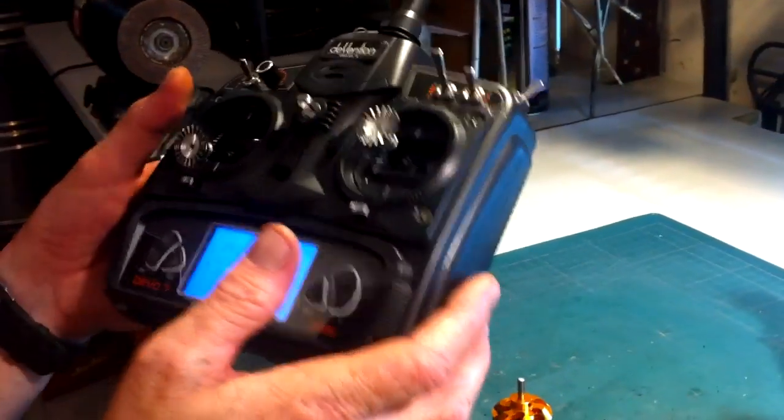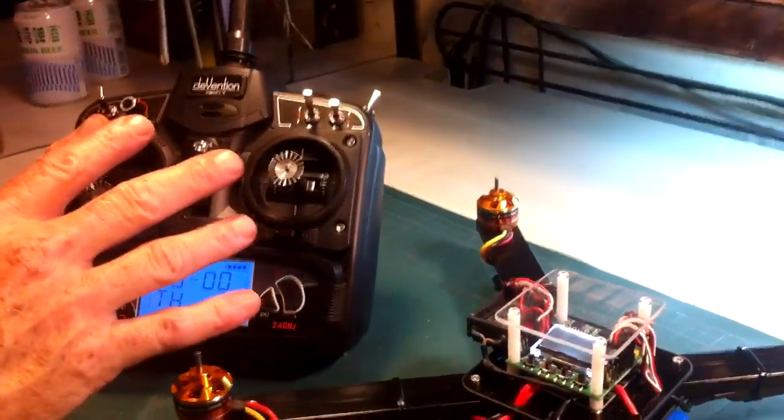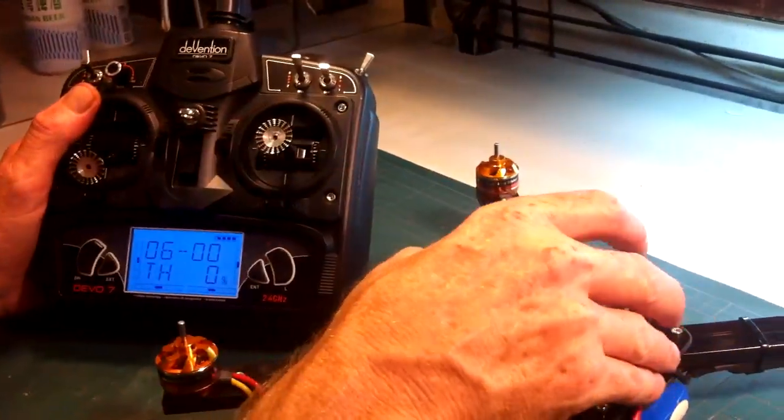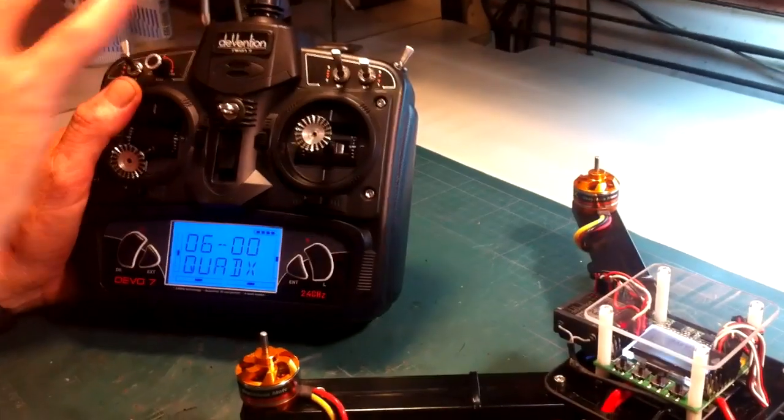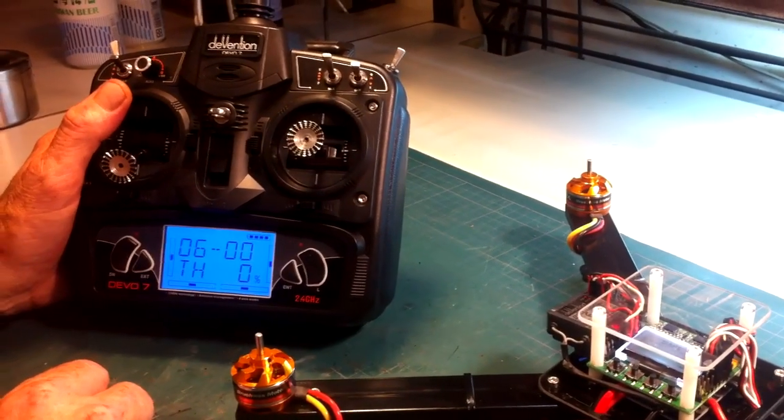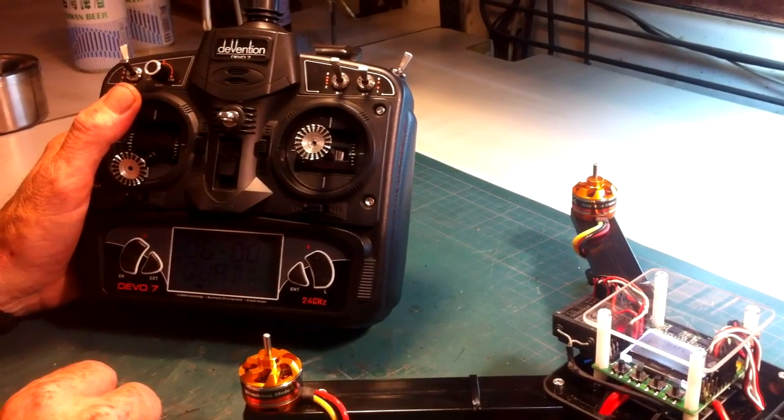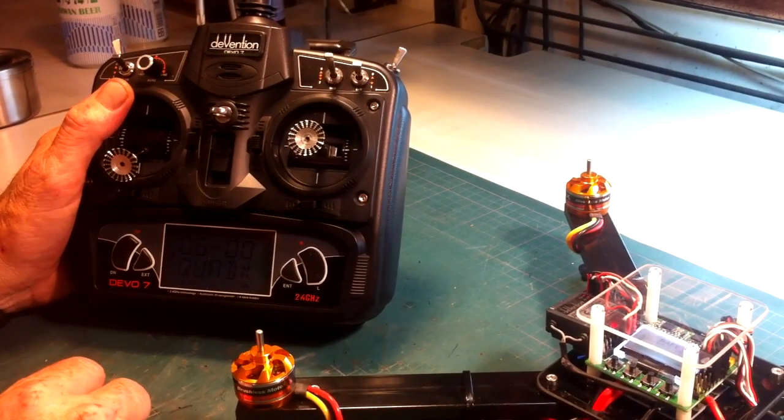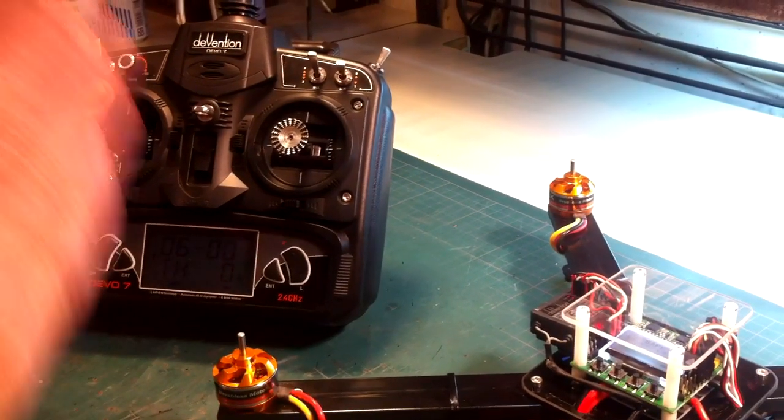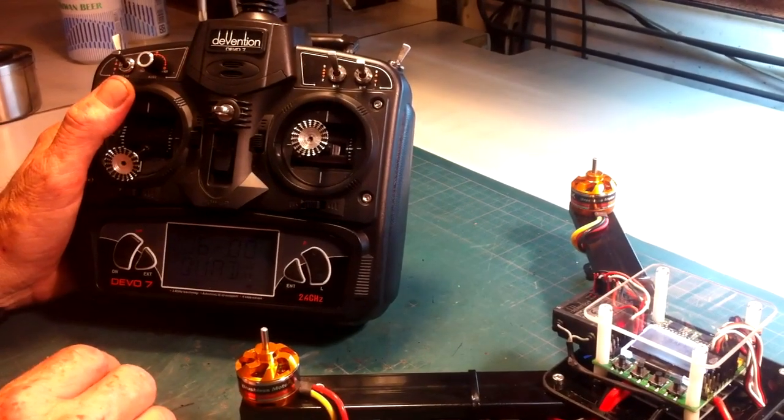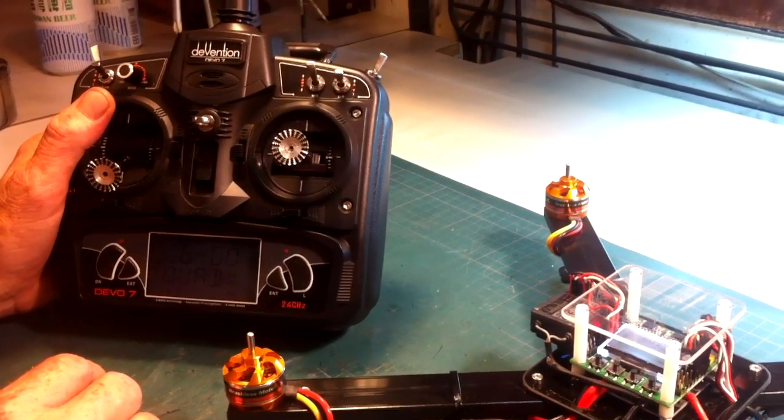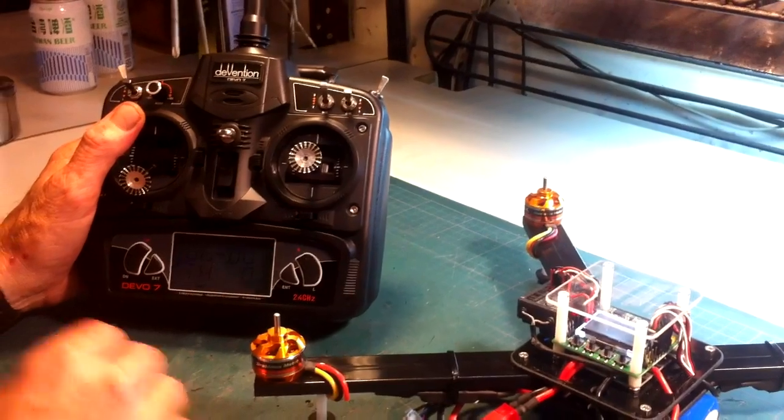But essentially as far as the radio was concerned, when you're going to use a KK2 board, you just want to set all your endpoints to 100% and your trims to zero, sub trims to zero. All the trims and sub trims to zero.